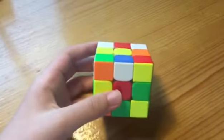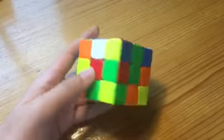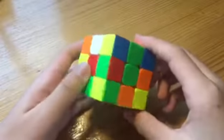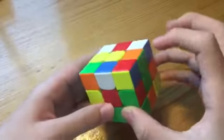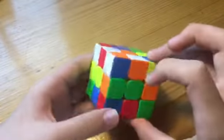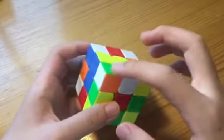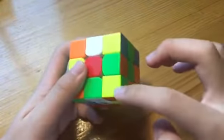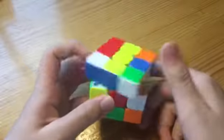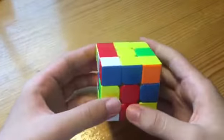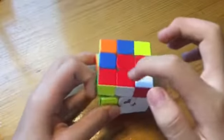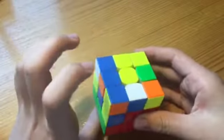The next solve is a 4.83, and he does a white X-cross with these 4 cross pieces, inserting this F2OL edge in the back along with this cross edge, and inserting this corner to here to create a block at the back, like so.